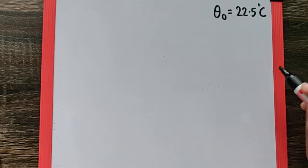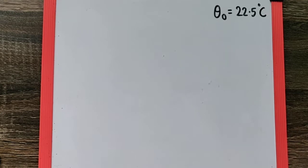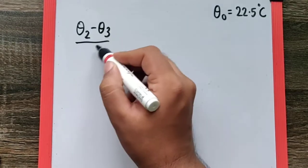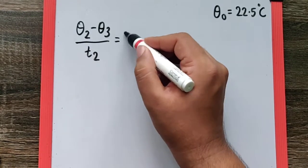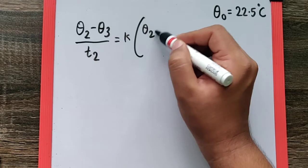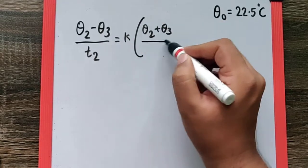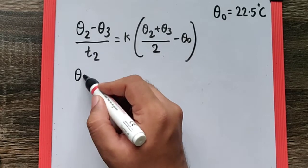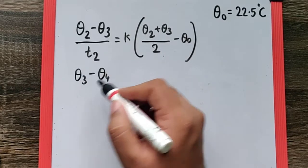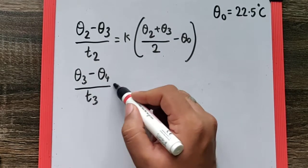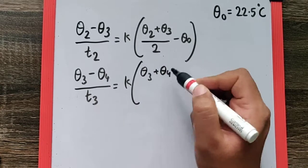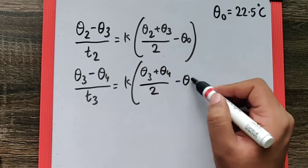For which we need to take one of the two previous cases. I can say theta 2 minus theta 3 upon time t2 is k times the average of theta 2 and theta 3 minus theta naught. The second case would be theta 3 minus theta 4 upon the time t3 is k times the average of theta 3 and theta 4 minus theta naught.